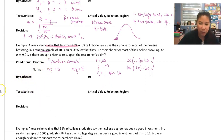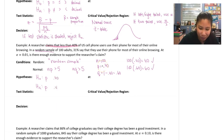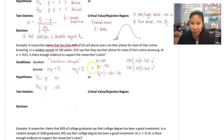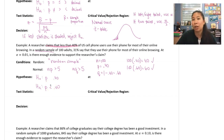For our hypotheses, since these are proportions we use p instead of mu, and we already know p is 0.40. The claim says less than 40%, so we're using a less-than sign, which does not have the equal sign — so that goes in Ha. Ha: p < 0.40. Ho has to be the opposite: Ho: p ≥ 0.40. Alpha is 0.01.